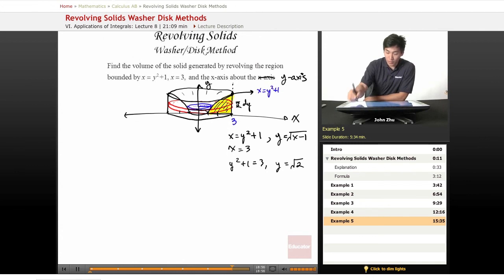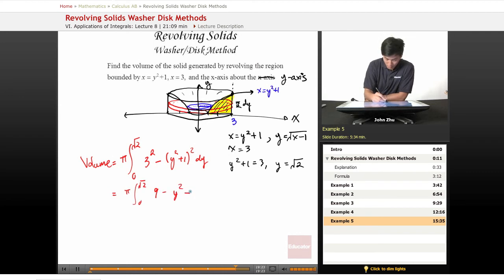So let's look at our volume. Just apply directly: volume equals pi from 0 to square root of 2, 3 squared minus y squared plus 1 squared dy. So if we multiply this out, 0 to square root of 2, 9 minus y to the fourth minus 2y squared minus 1. Be careful when you substitute and not to lose order of operations points.